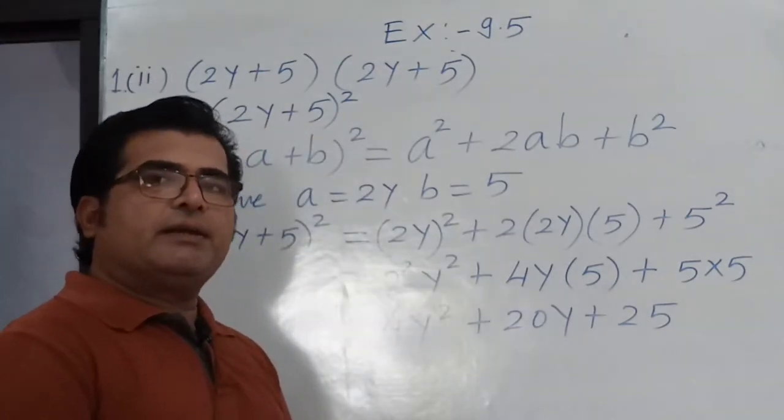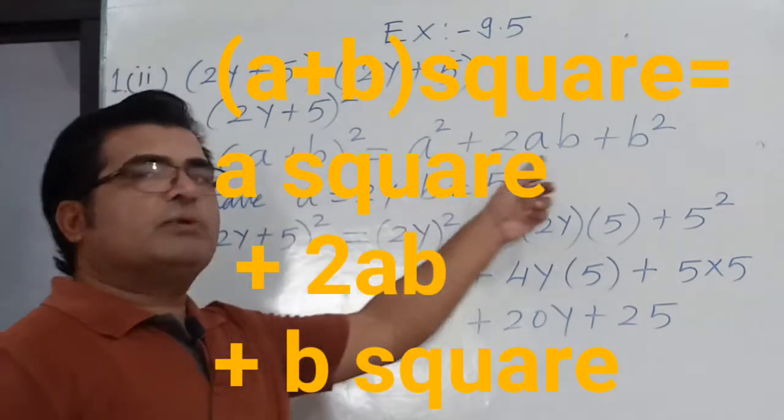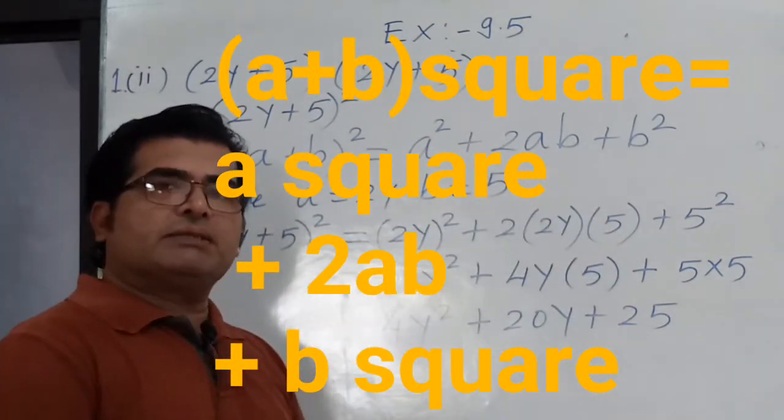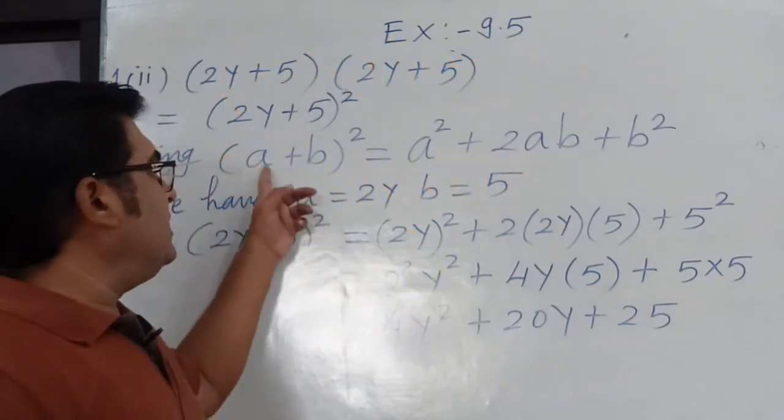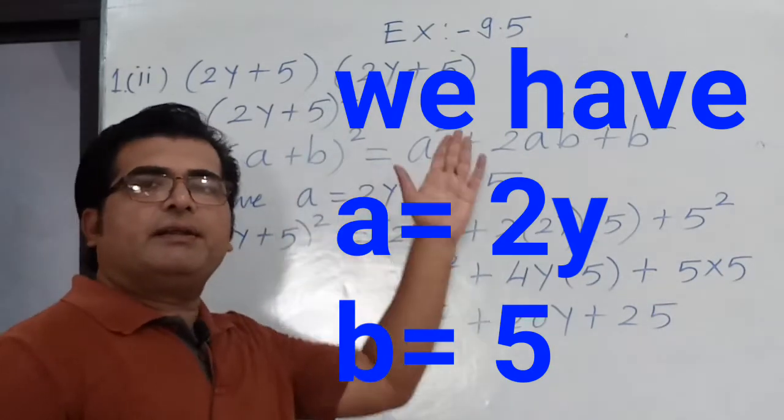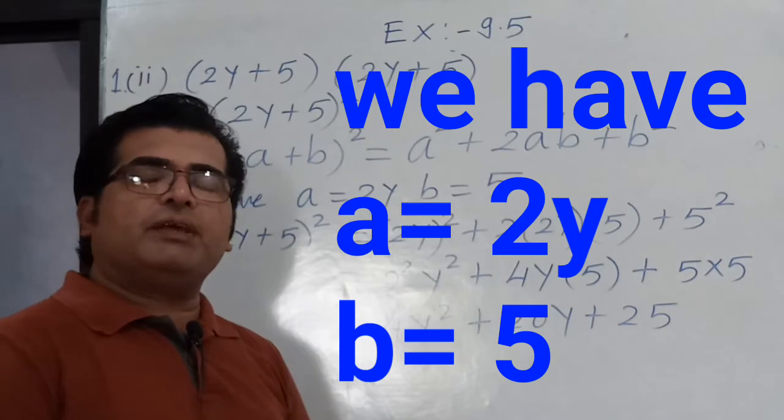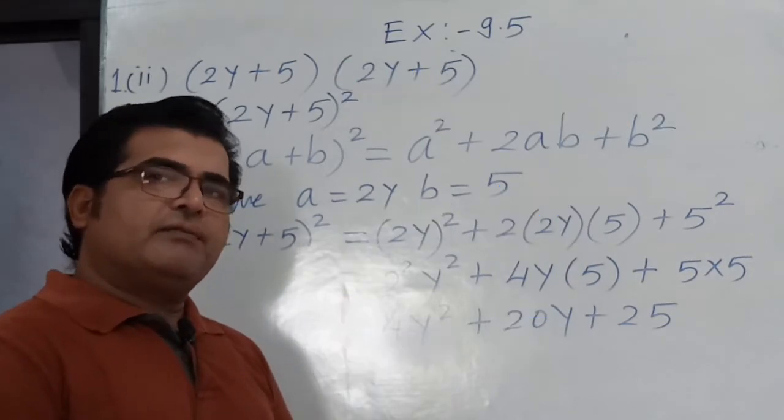Then the suitable identity is a plus b the whole square. A plus b the whole square equals to a square plus 2ab plus b square. Then we have a equals to 2y and b equals to 5. In this identity, wherever we have a we will write 2y, and wherever we have b we will write 5.